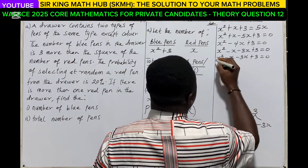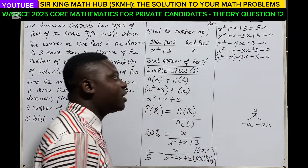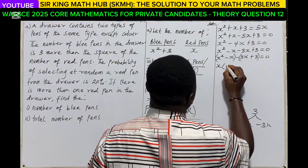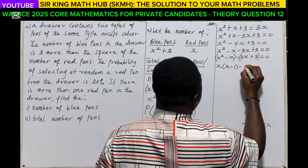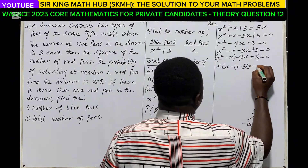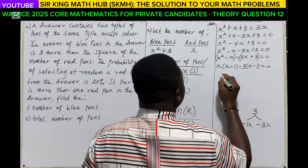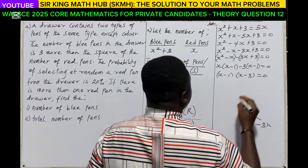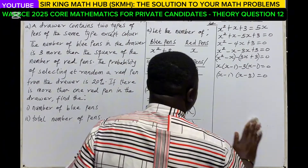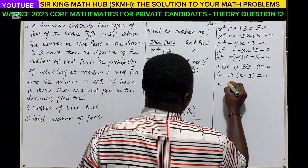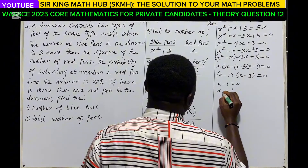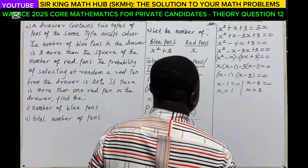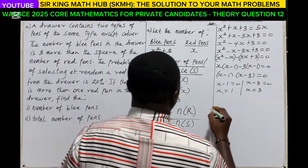Grouping: x(x − 1) − 3(x − 1) = 0, which gives (x − 1)(x − 3) = 0. Setting each factor equal to zero: x = 1 or x = 3. We want the number of blue and red paints.